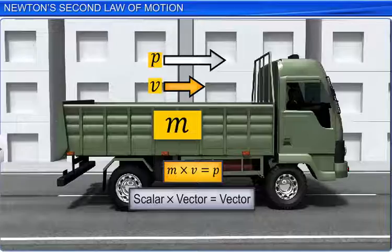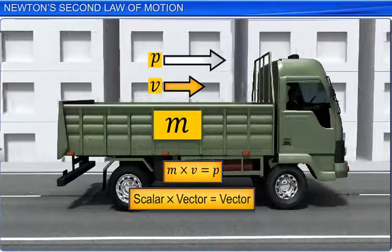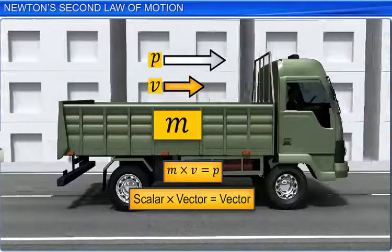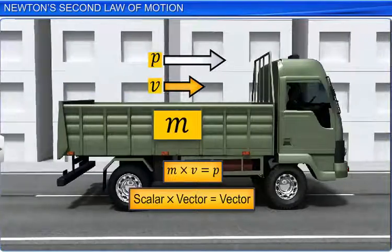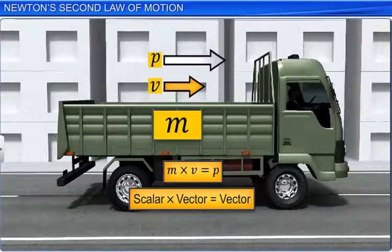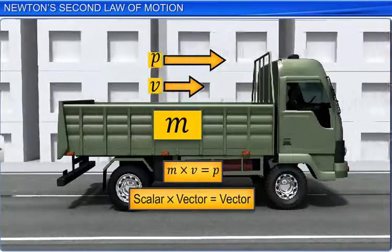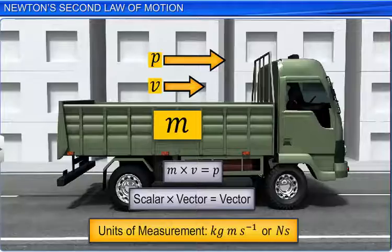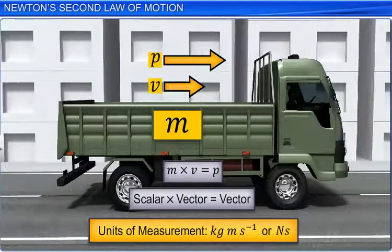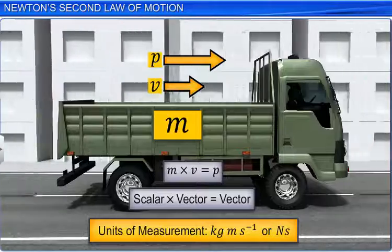Since mass M is a scalar and velocity V is a vector, their product, momentum P, is a vector. In the SI system, momentum is measured in kilogram meter per second or newton second.